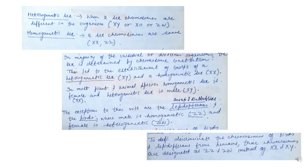To summarize the exceptions: in lepidopterans and birds, the heterogametic sex is female and the homogametic sex is male. To discriminate the chromosomes of birds and lepidopterans from humans, their chromosomes are designated as ZZ and ZW instead of XX and XY.